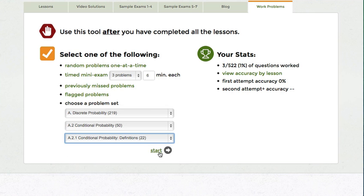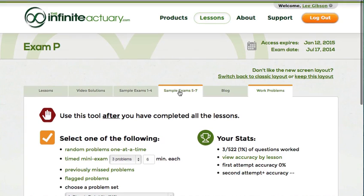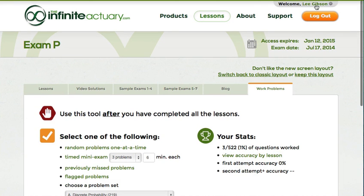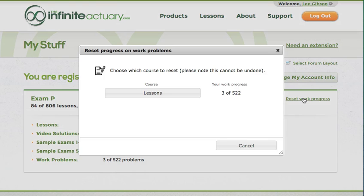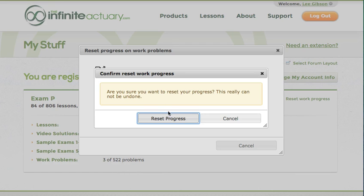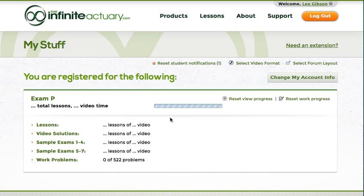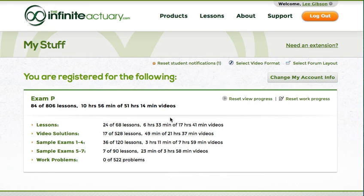The last thing I want to mention is that it is possible to totally reset your work progress for the whole course. Go to My Stuff by clicking on your name in the upper right corner of the website, and click on the Reset Work Progress link in the upper right corner of your course product frame. This is not a reversible option, so you'll have to verify and then confirm that you really do want to reset your progress for these lessons. But once you do, you'll be able to start completely from scratch on all the problems in the course again.